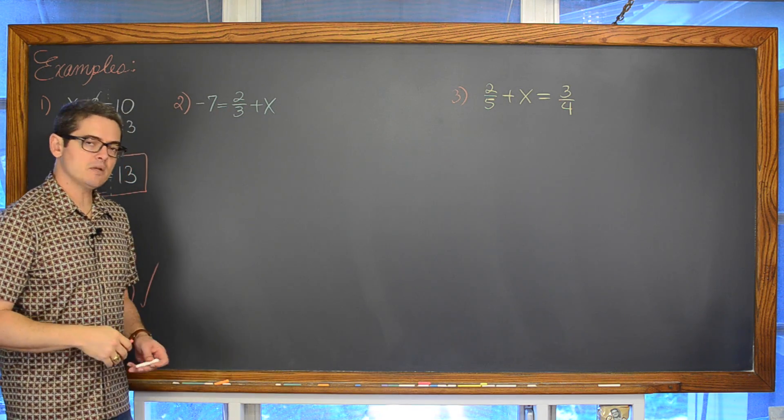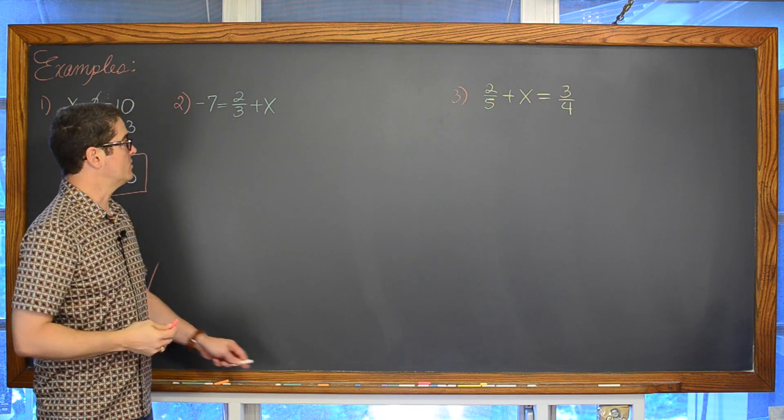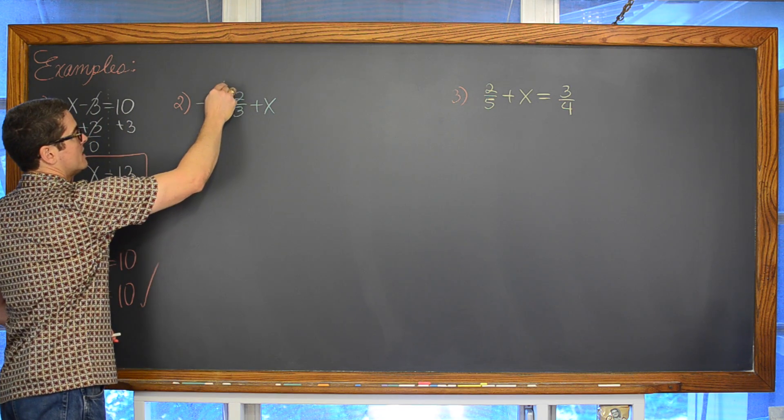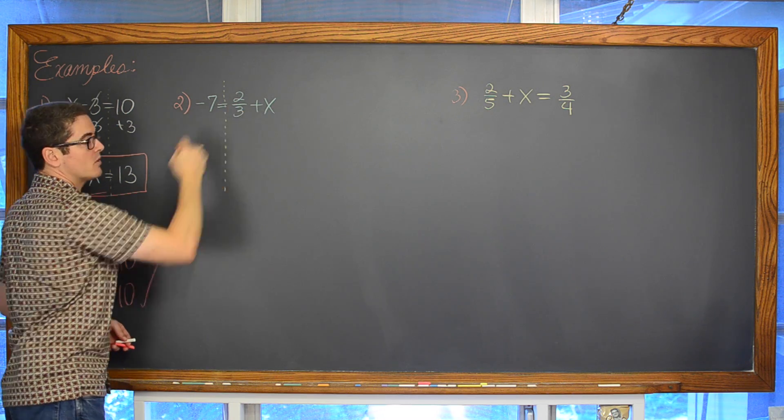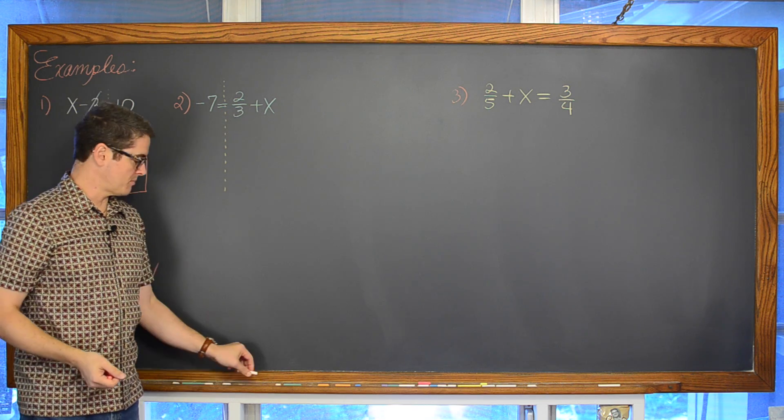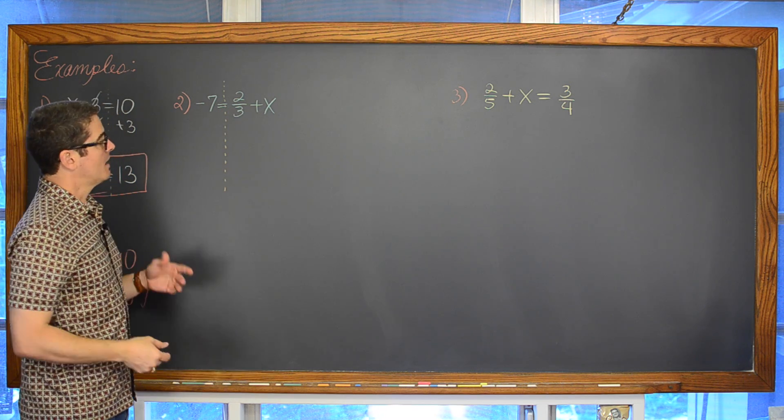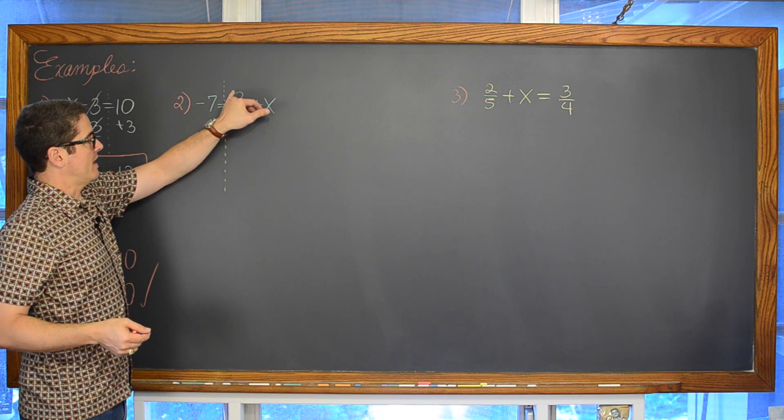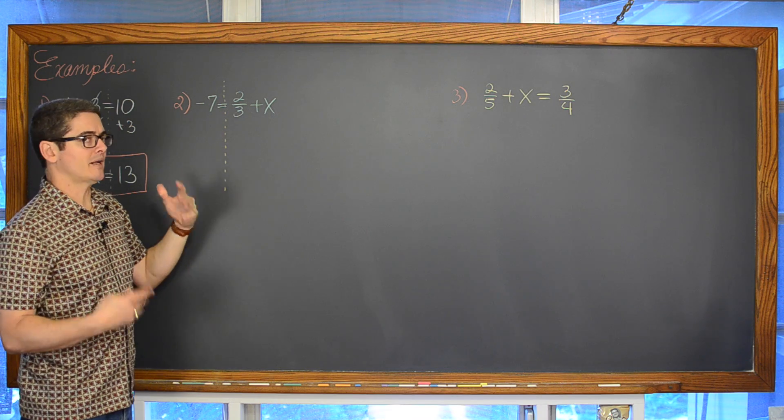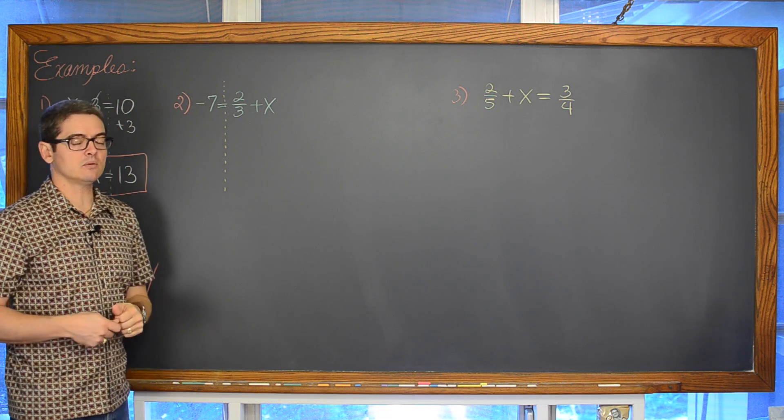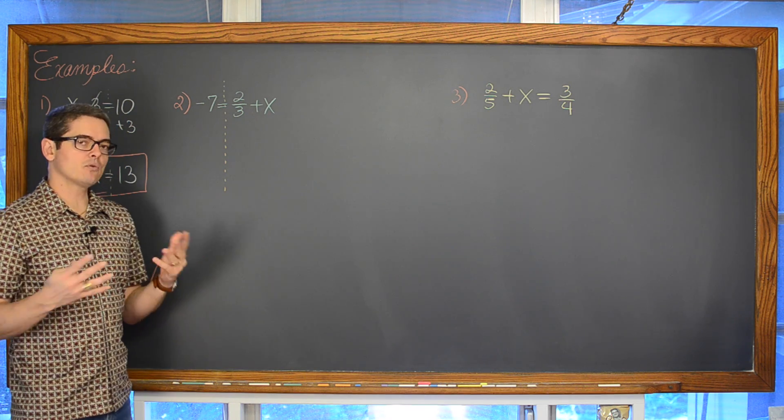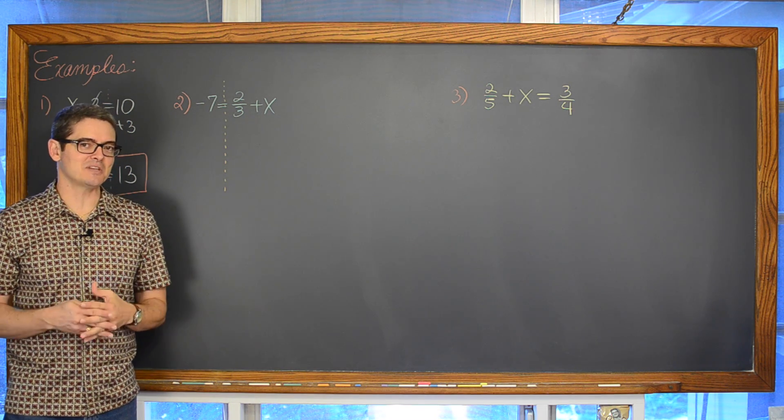Now moving on to a one step equation that maybe we can't do in our head. We have negative 7 is equal to, so here comes our equal sign separating the left side from the right hand side of our equation. And that negative 7 is equal to 2 thirds plus x. Now I do not know off the top of my head that 2 thirds plus some number to make that equal negative 7. So we are indeed going to need to actually work this out and don't grab the calculator as soon as you see a fraction please.